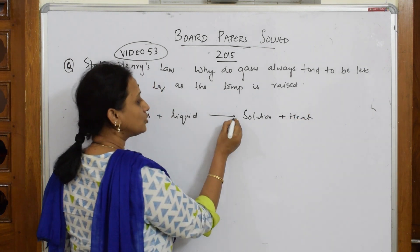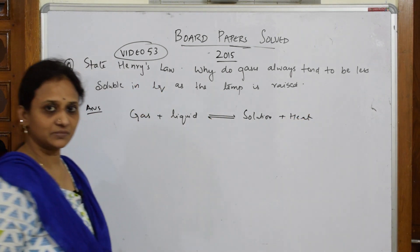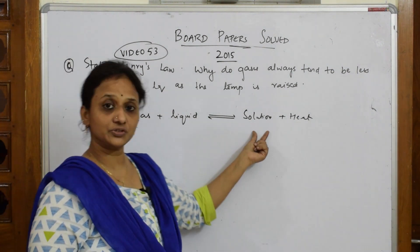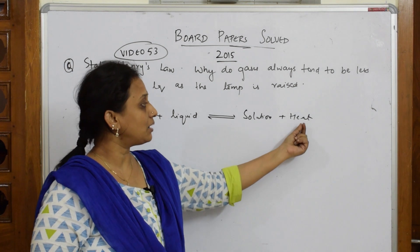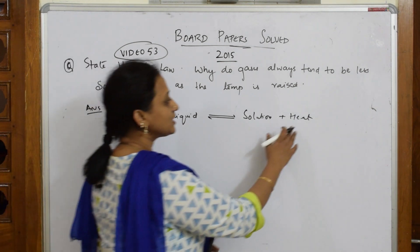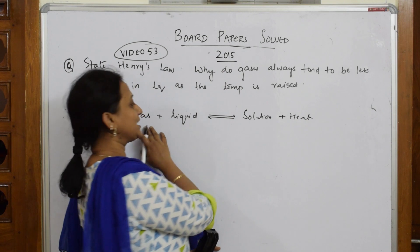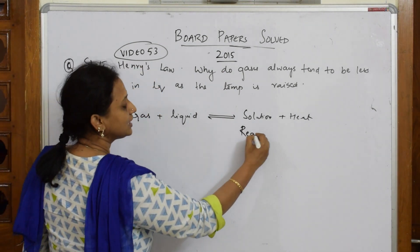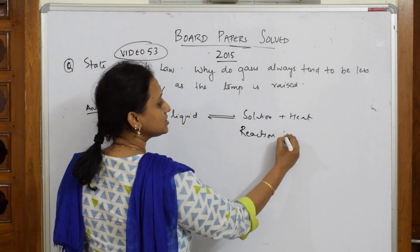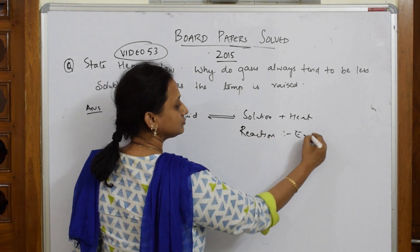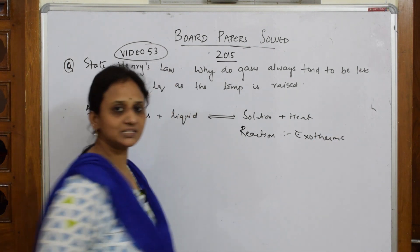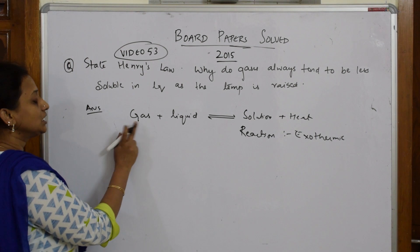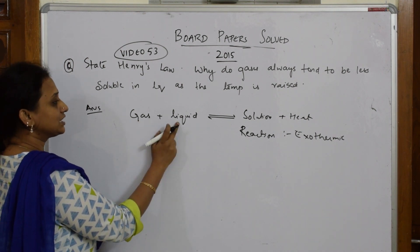When gas dissolves in liquid, the gas and liquid together form a solution, and during this process a small amount of heat is released. Both are in equilibrium. So this particular reaction — gas dissolving in liquid — is an exothermic reaction, because energy is released. If it absorbed energy, we would call it endothermic.